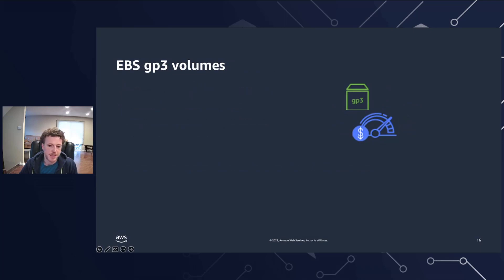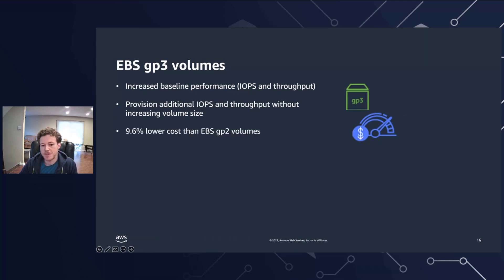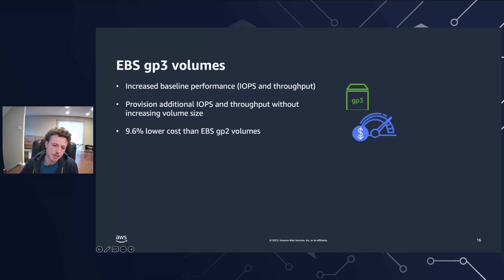Amazon OpenSearch Service data nodes require low latency and high throughput storage to provide fast indexing and query. By using EBS GP3 volumes, you get higher baseline performance in terms of IOPS and throughput. You can provision additional IOPS and throughput independently of your volume size using the GP3, and you get a 9.6% lower cost than with the GP2 EBS volume type. The new volumes are also more stable as they do not use burst credits. The new volume type doubles the per data node volume size limits, and with these larger volumes, you can reduce the cost of passive data by increasing the amount of storage per data node.